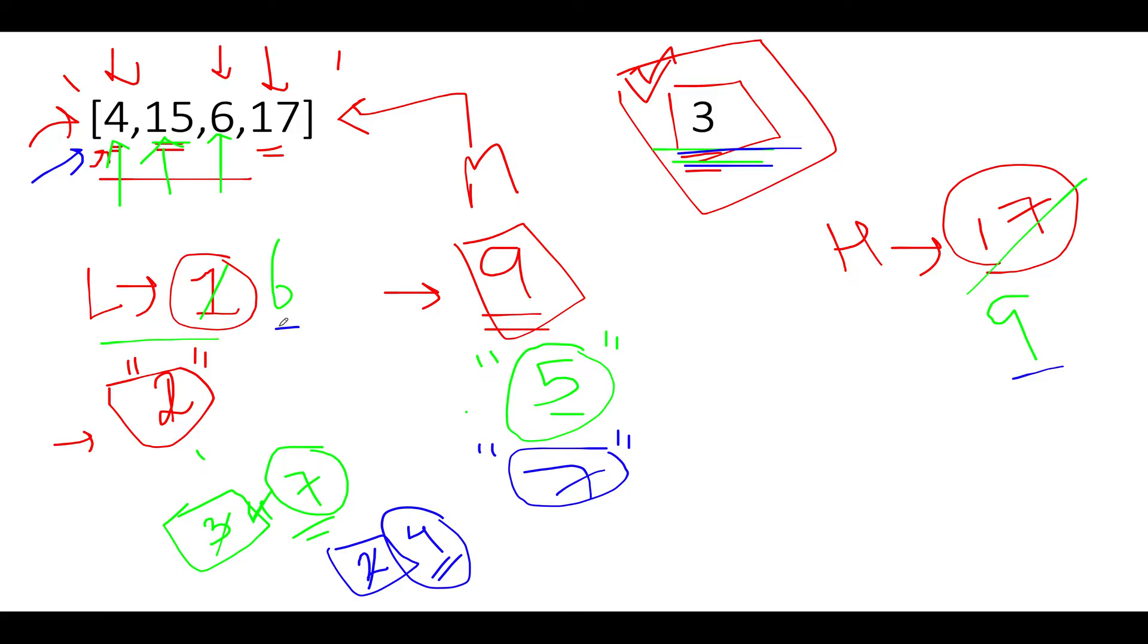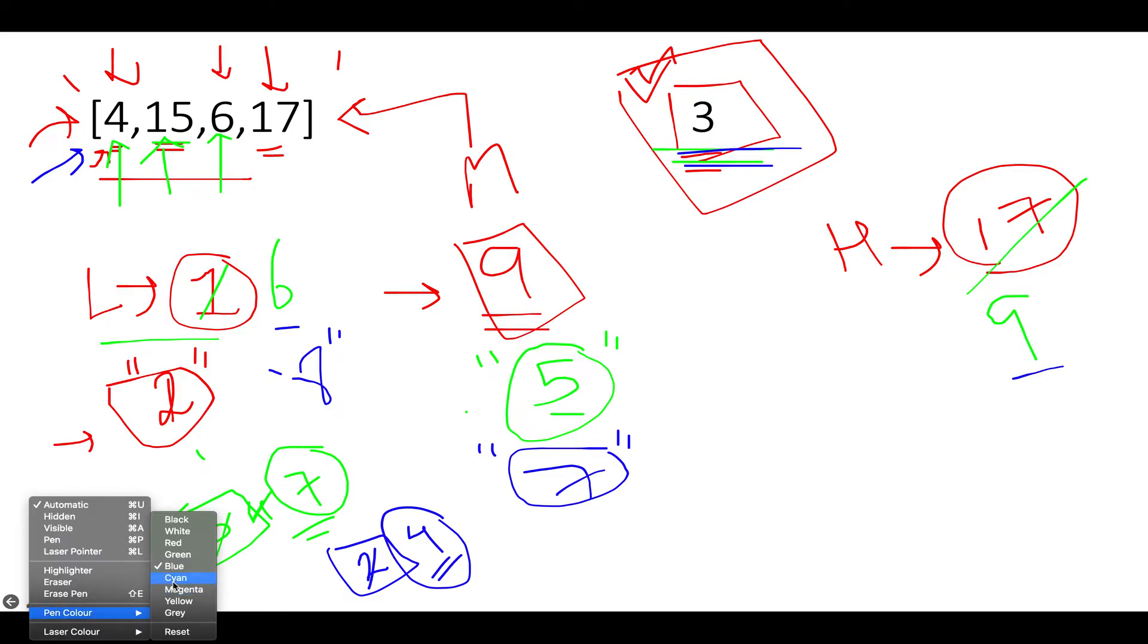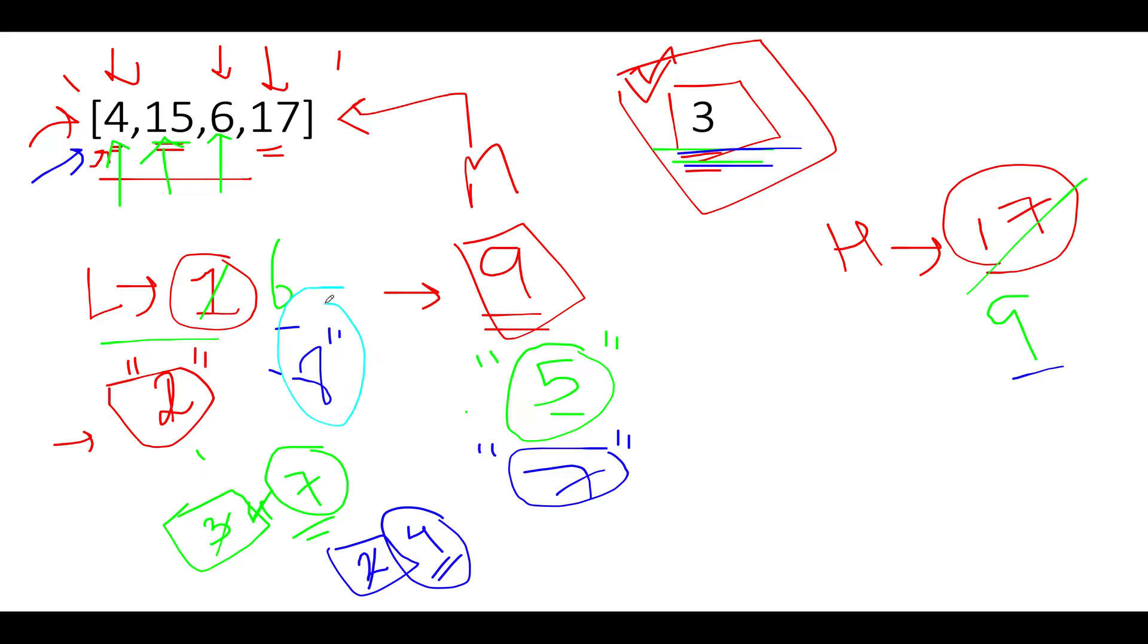Then what should we do? We'll update our low pointer to mid plus 1. Low gets updated to 7 plus 1, which is 8. High is 9. Now mid gets updated to 8 plus 9 is 17, divided by 2 gives 8. Let's try whether we'll be able to sustain how many children if we distribute 8 candies to each. First is 4: 4 by 8 gives 0. 15 by 8 gives 1. 6 by 8 gives 0. 17 by 8 gives 2. So 1 plus 2 gives 3 in total. We're able to sustain 3 children, which is in sync with our expectation.